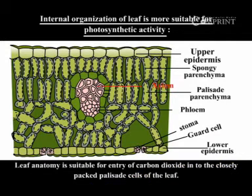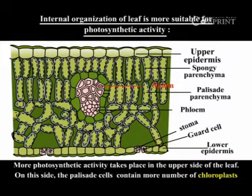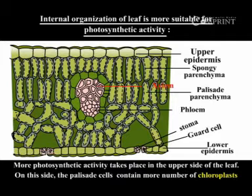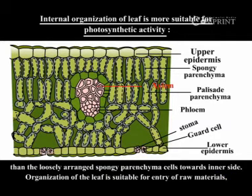Leaf anatomy is suitable for entry of carbon dioxide into the closely packed palisade cells on the leaf. More photosynthesis activity takes place on the upper side of the leaf. On this side, the palisade cells contain more chloroplasts than the loosely arranged spongy parenchyma cells towards the inner side.